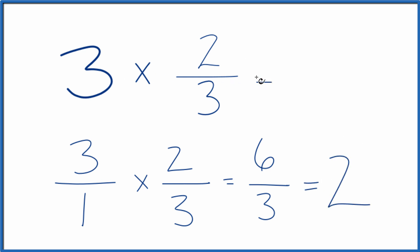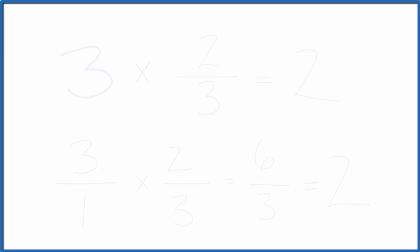Same thing we got before. So 3 times 2 thirds equals 2. This is Dr. B. Thanks for watching.